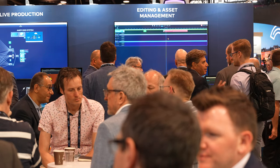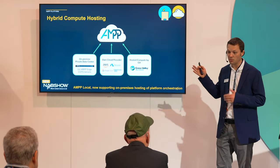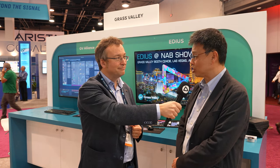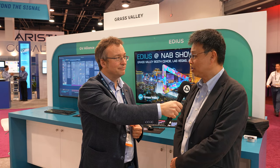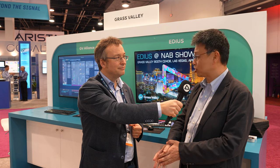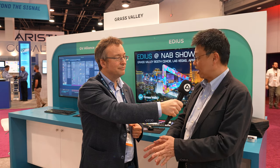We see that Grass Valley has a focus now on the AMP solution — the Agile Media Processing platform — and there is some news from the EDIUS side as well. Yes, at the show we are showing EDIUS support for AMP. In detail, we're supporting the FramerateX plug-in to support AMP assets and editing them directly in EDIUS.